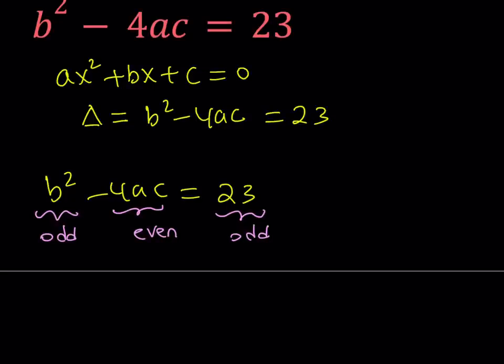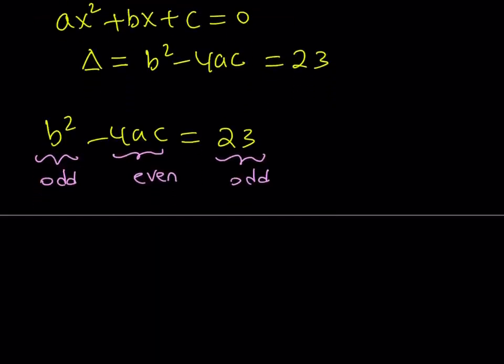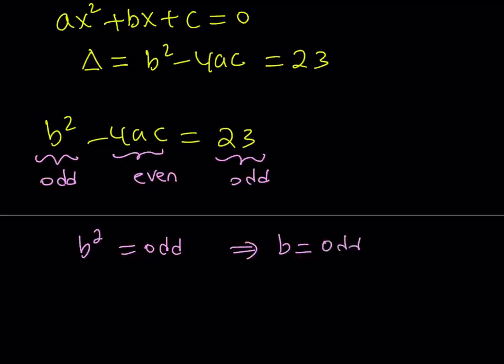So when do you get an odd number? If you subtract an even number from another number, that number also needs to be odd. In other words, odd minus even equals odd. Otherwise, even minus even is also even — and you can easily prove this. Now, what does that mean for b squared to be odd? If b squared is odd, this basically implies that b is odd. Because if a number is even, its square cannot be odd either. So we can prove by contradiction that this is impossible. So b needs to be odd as well.